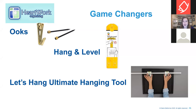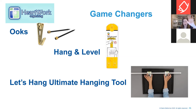The second tool I love is called the Hang and Level, from a company called Under the Roof Decorating (UTR). It allows you to perfectly position items using just your two hands without needing a second person to hold things while you guess where the nail goes. It's a real time-saver. Third, for hanging large galleries with multiple items, there's a tool by a company called Let's Hang — called the Ultimate Hanging Tool.